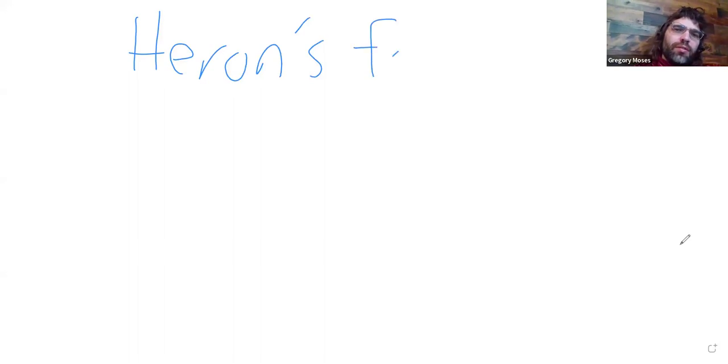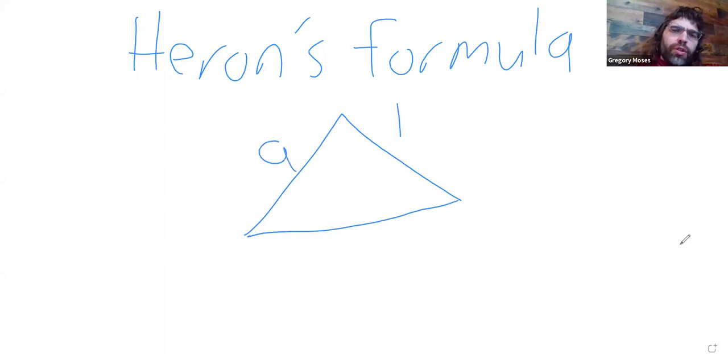Heron's formula is an area formula that lets you take a triangle whose sides you know and find the area of the triangle.